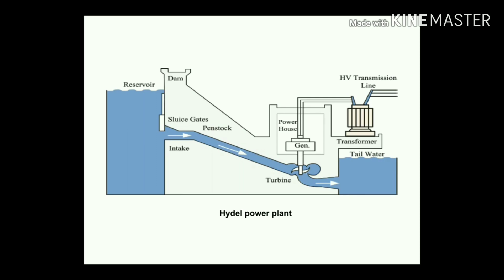The second one is hydro power plants. In this case, we build a dam which acts as a reservoir of water. The potential energy of the water is converted into kinetic energy with the utilization of a penstock, and that kinetic energy drives a water turbine. The turbine rotates, and the shaft connected to it also rotates. The shaft is connected to a generator, producing energy that is transmitted via high-voltage transmission lines to different systems, household applications, or industries.